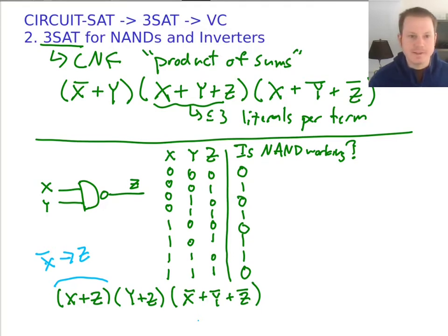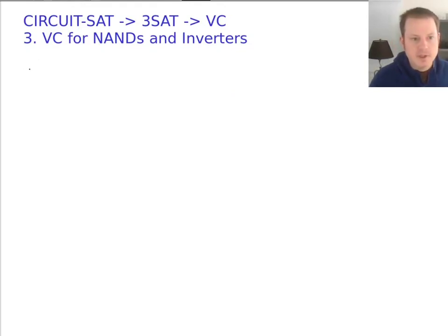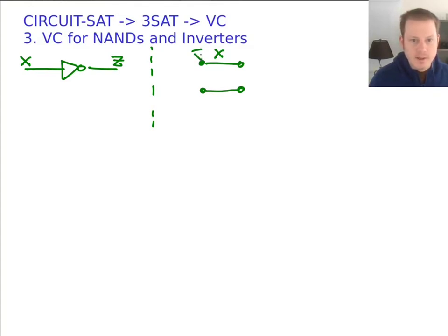Now for the part I'm really interested in: the vertex cover. The idea is that we want to force the vertex cover to choose an assignment of variables as true or false. Let's start with just an inverter with input X and output Z. You can represent this by drawing two nodes with a connection between them: one node represents X being false, one represents X being true. Same for Z. Any minimum vertex cover for this edge is going to be size two — one choice for X and one for Z — essentially choosing whether X should be zero or one.